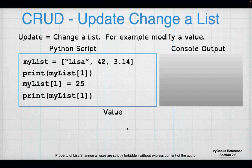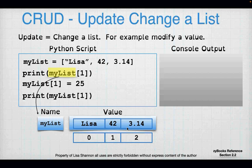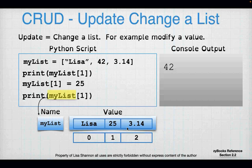CRUD U is update — it changes the list. I have my_list equal to Lisa, 42, 3.14. I print my_list[1] and it comes out 42. On the next line, I say my_list[1] equals 25. What I've done is told Python the second element in my list — at index one — is now supposed to be replaced with 25. So I just updated my list: it is now Lisa, 25, and 3.14.